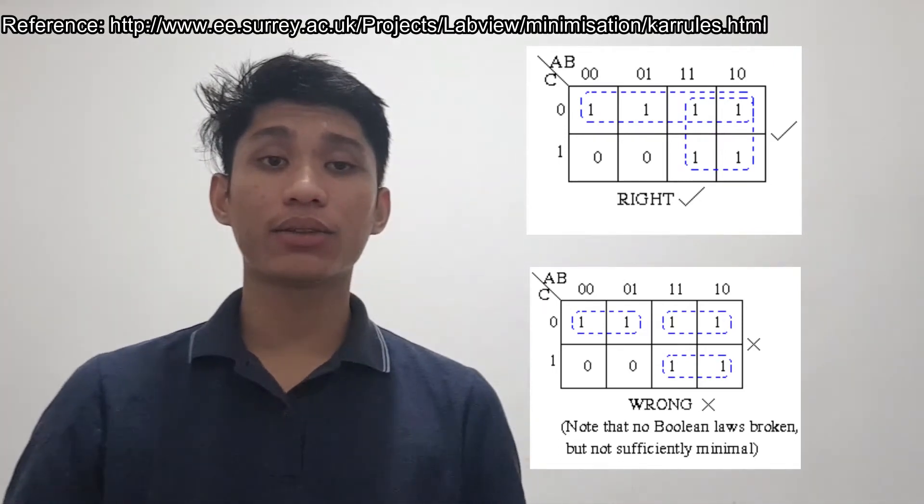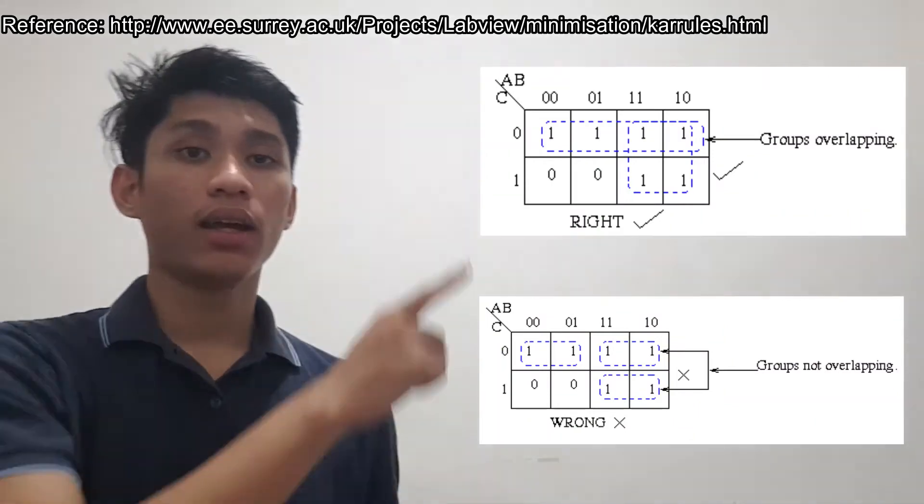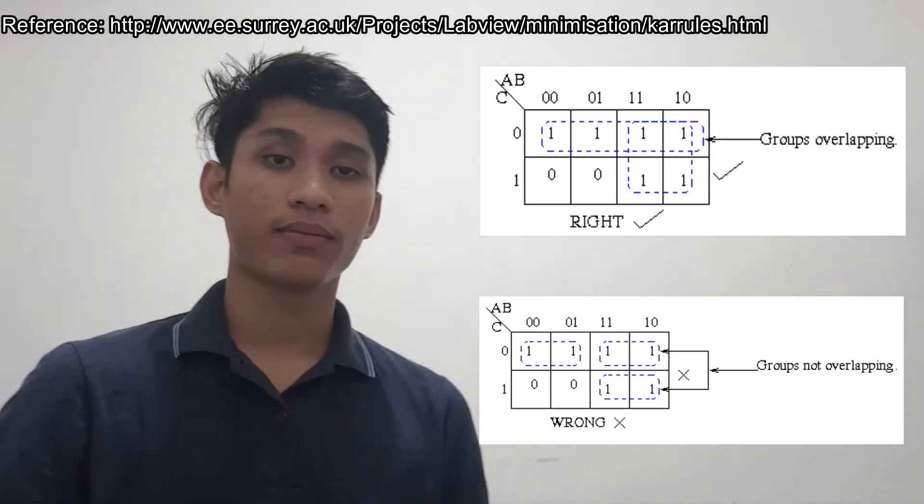For our next rule, groups may overlap. Here is the right one and this is the wrong one.